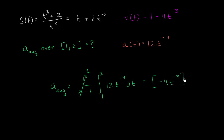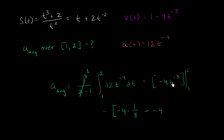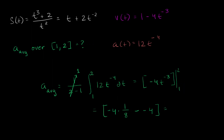We evaluate negative 4t to the negative 3 from 1 to 2. At the upper bound t=2, it's negative 4 times 2 to the negative 3, which is negative 4 times one eighth, giving negative one half. Then we subtract the expression evaluated at t=1: minus (negative 4 times 1 to the negative 3), which is minus negative 4, so positive 4. That gives us positive 4 minus one half, which we can write as 3 and a half, or as the improper fraction 7 halves.